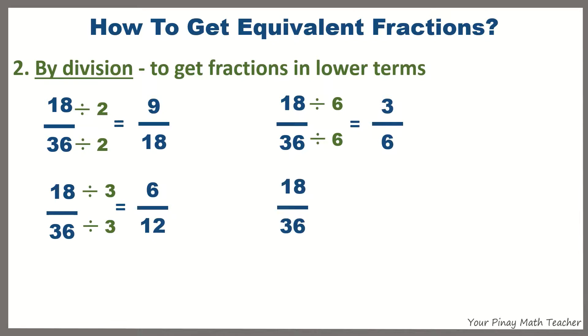18 and 36 can also be divided by 9. So, the answer is 2 fourths. And lastly, 18 and 36 can be divided by its greatest common factor, 18. So, the answer is 1 half. Since 1 half cannot be divided anymore, then 1 half is the lowest term of the fraction 18 over 36.